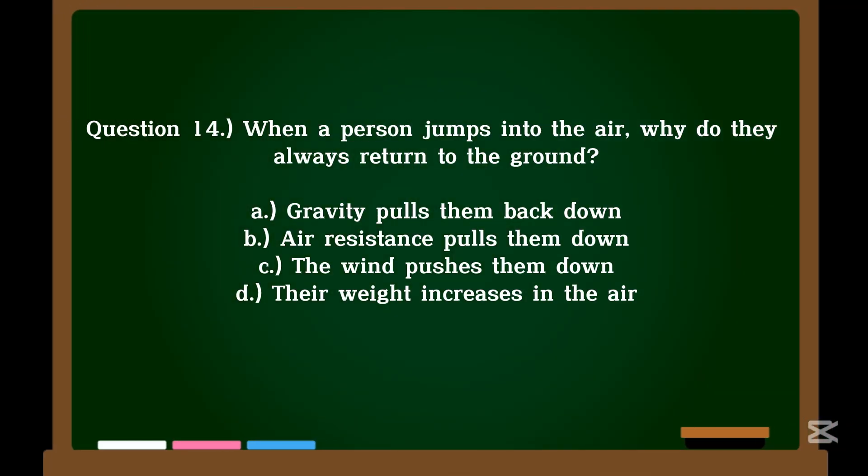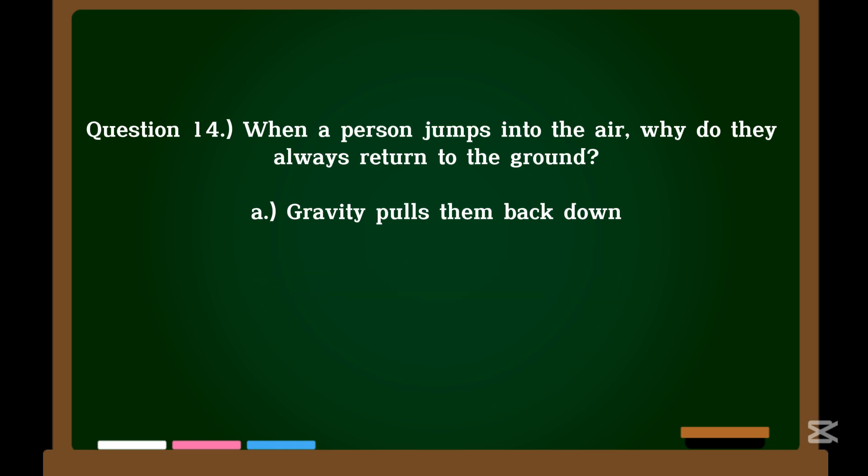Question 14. When a person jumps into the air, why do they always return to the ground? A. Gravity pulls them back down. B. Air resistance pulls them down. C. The wind pushes them down. D. Their weight increases in the air. Correct answer: A. Gravity pulls them back down.